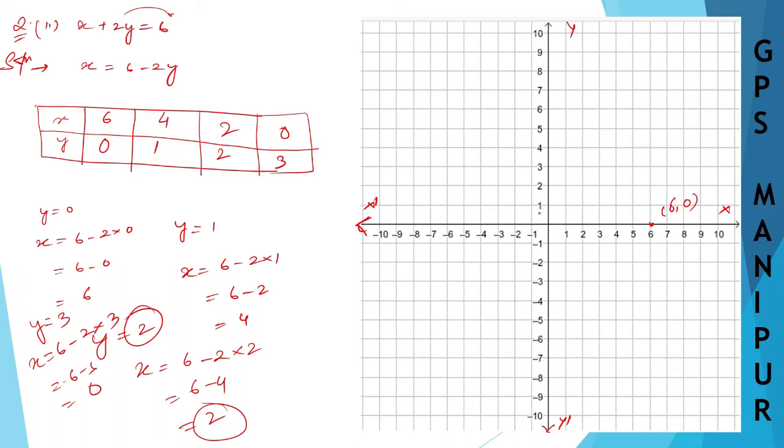For the next point, x is 4 and y is 1, so they meet here. This is the point (4, 1).